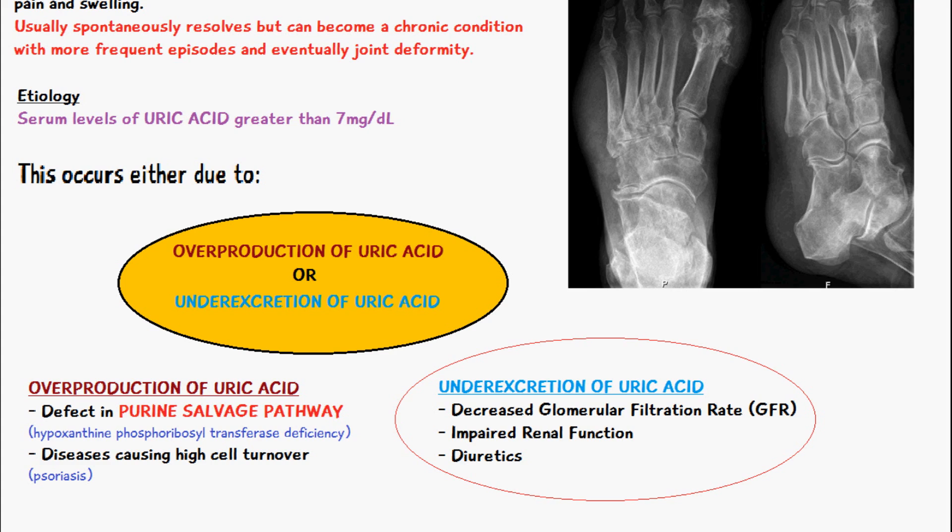The reason we have high levels of uric acid is either due to the overproduction of uric acid or the under-excretion of uric acid. Under-excretion is more common, and that's either due to a decreased glomerular filtration rate, impaired renal function, or an increase in consumption of diuretics, which also cause the under-excretion of uric acid.